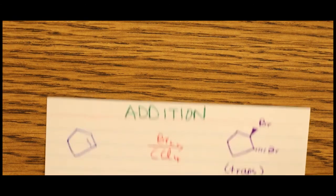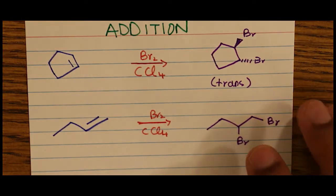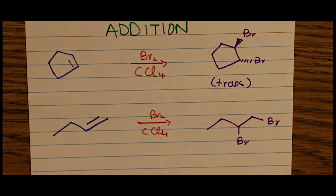Let's talk about another addition reaction, also known as the halogenation of alkenes, that works specifically with chlorine and bromine, not so much fluorine and iodine, because fluorine is too reactive and iodine is too unreactive.